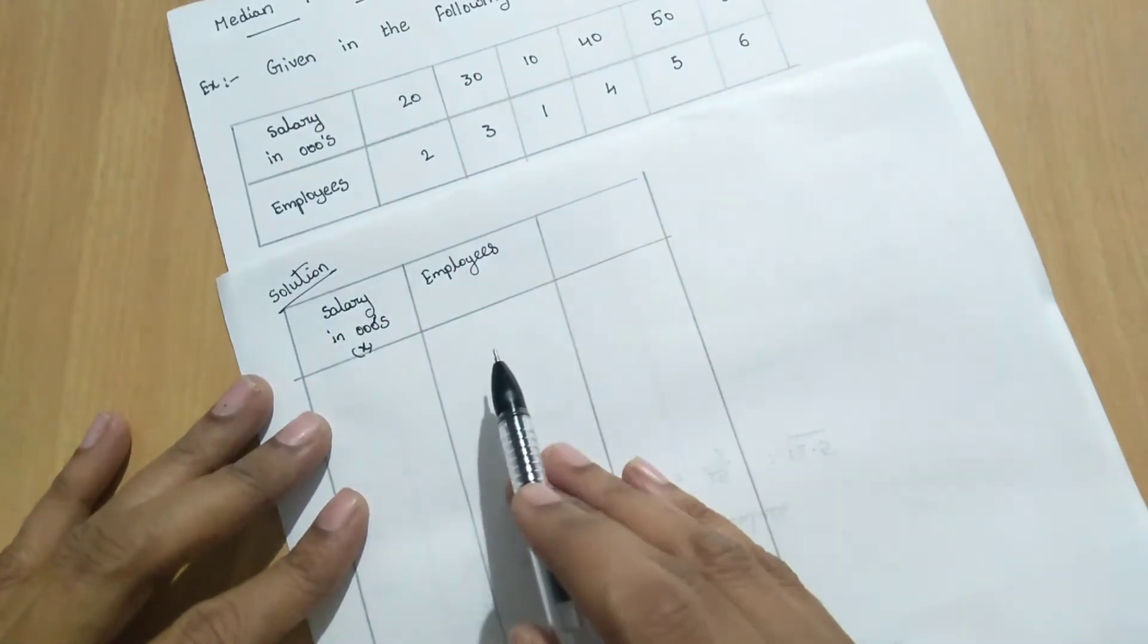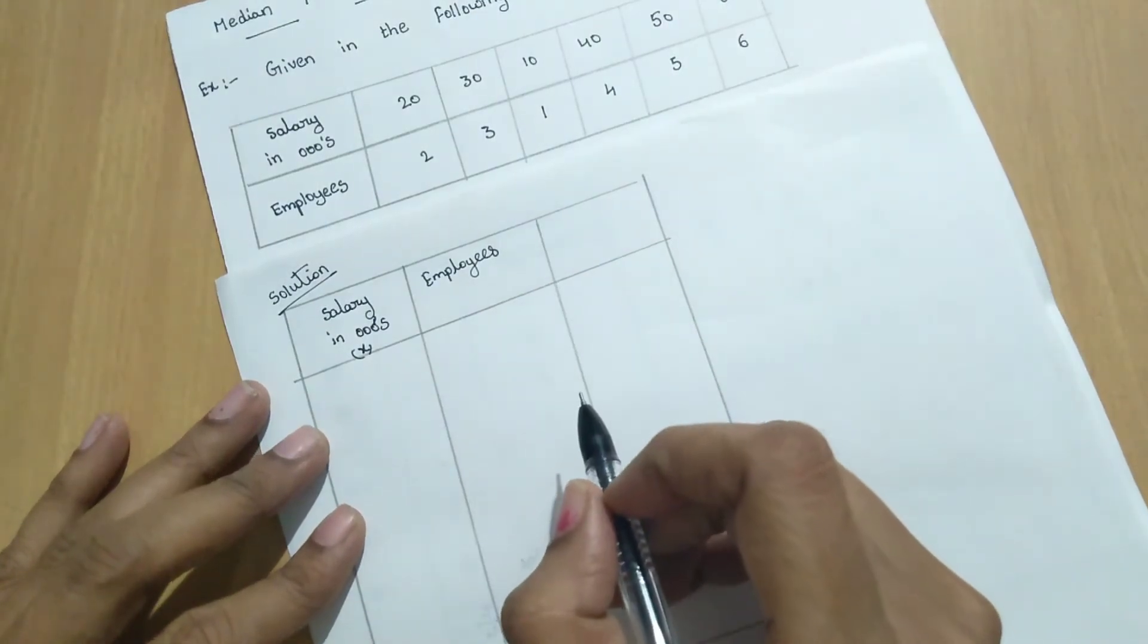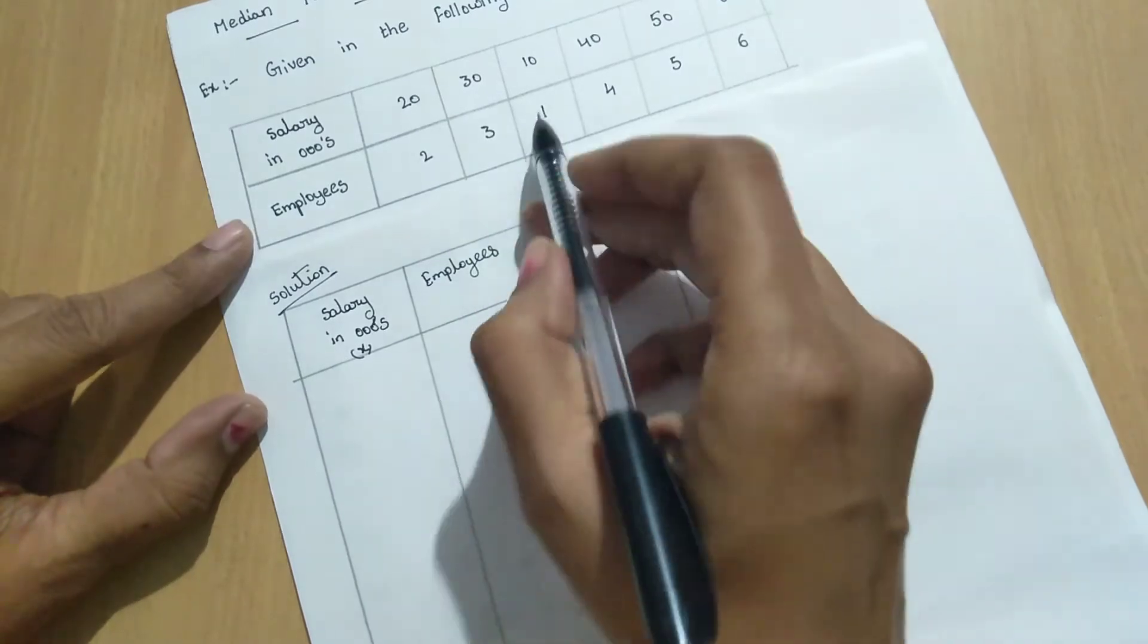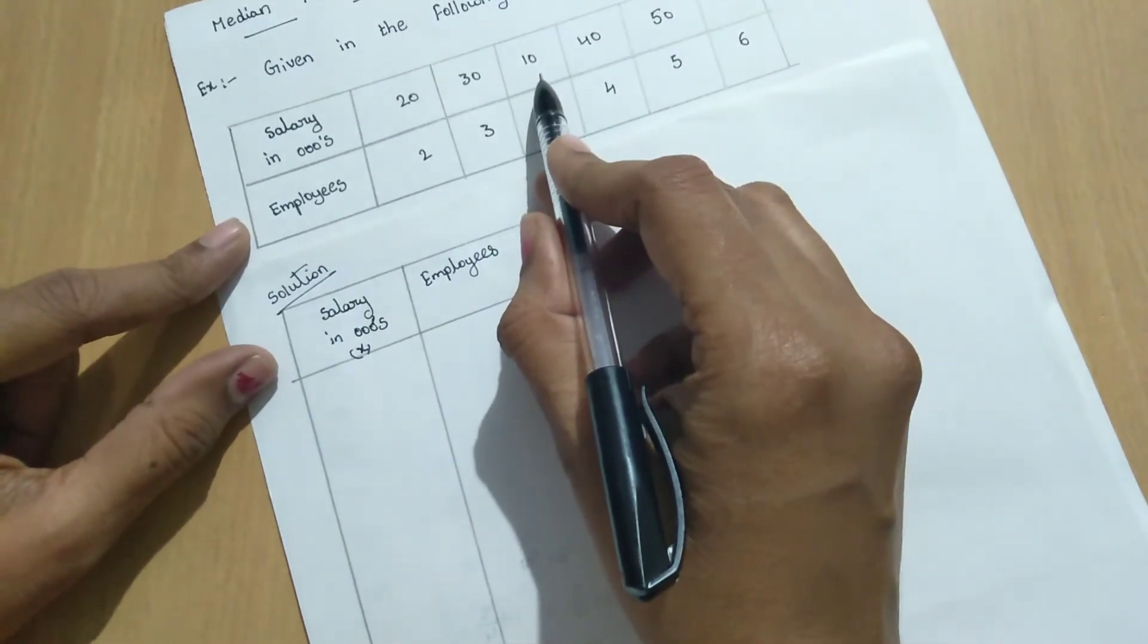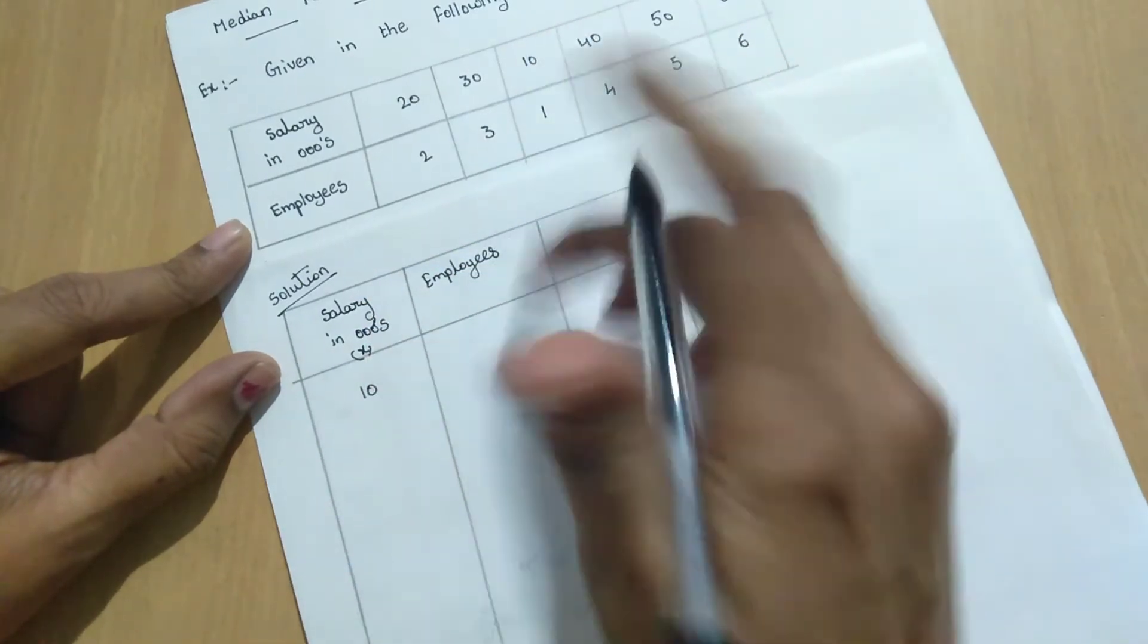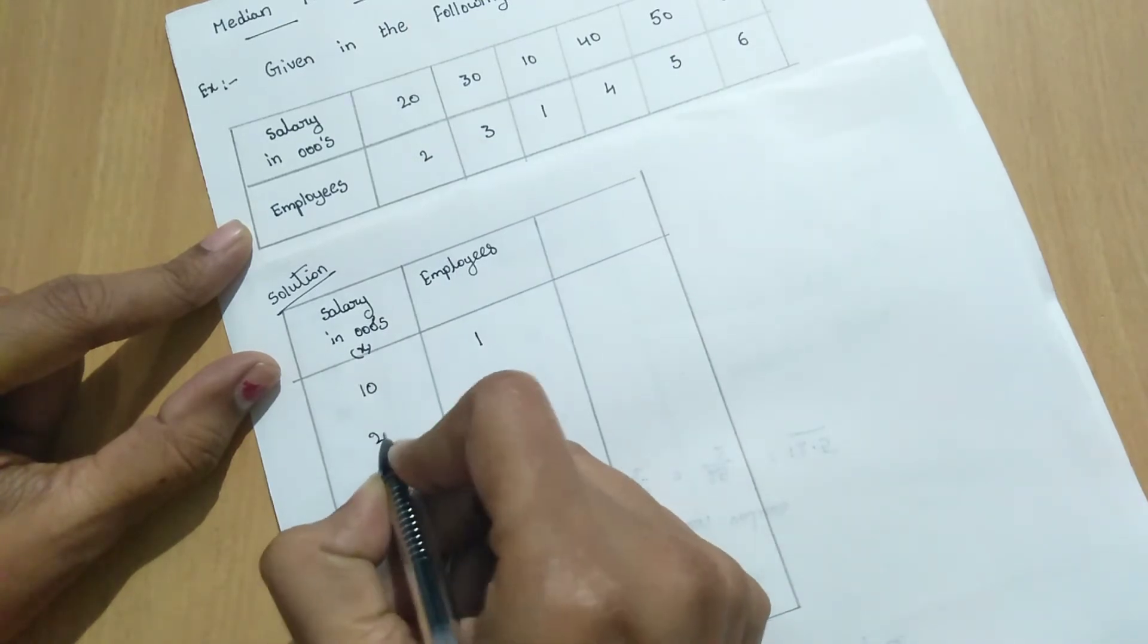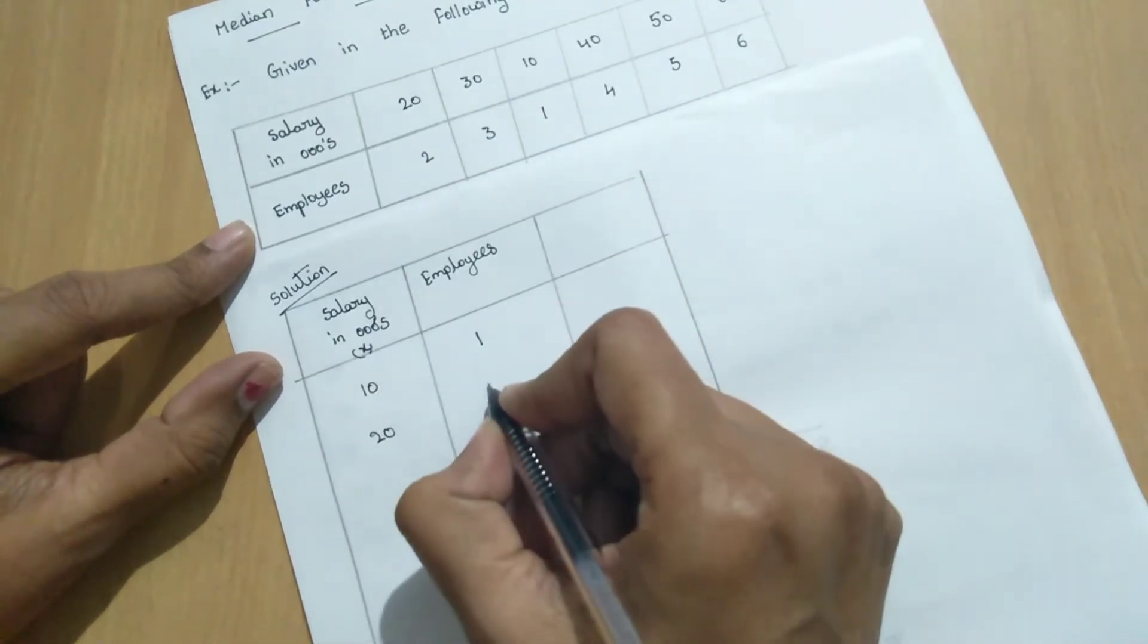So first we have to write this data in ascending order. So ascending order. So here 10, 10,000 that means 10 and what is the frequency value? 1 that means 1 person has 10,000 salary. Next 20,000. That means 2.